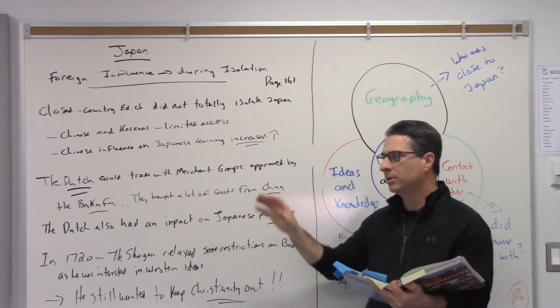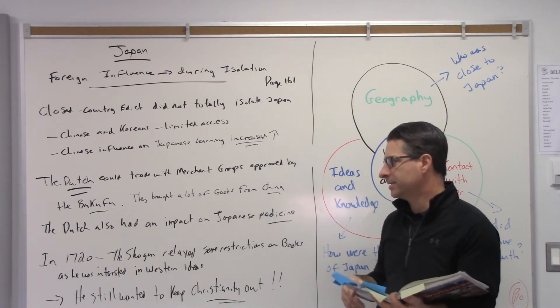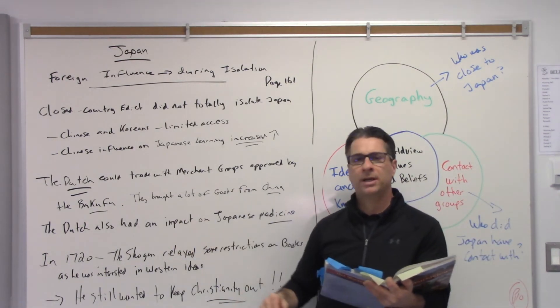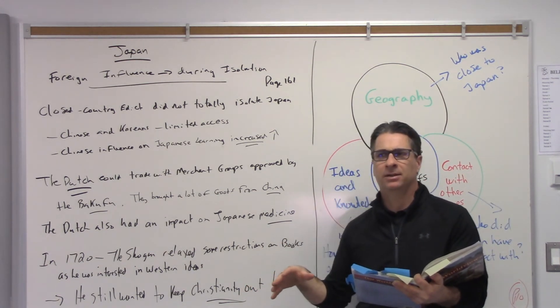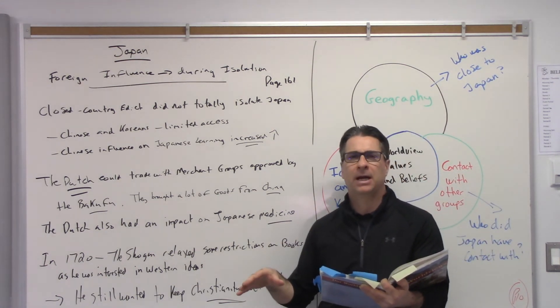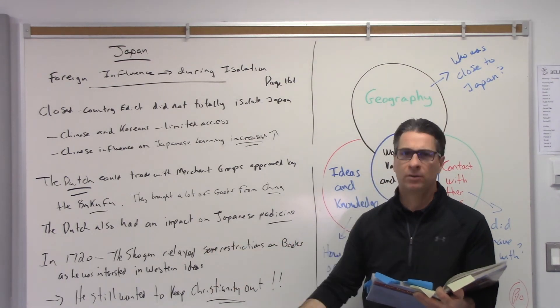So the Dutch were getting pretty rich and known by trading with the Japanese. Eventually in 1720 the Shogun relaxed some of the information, some of the books that were allowed, because he wanted to learn more about the West. He was realizing what was going on out there.